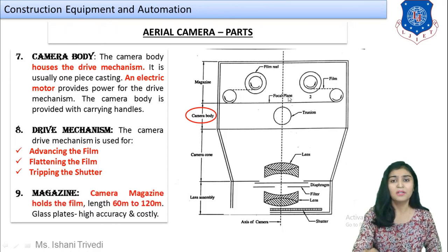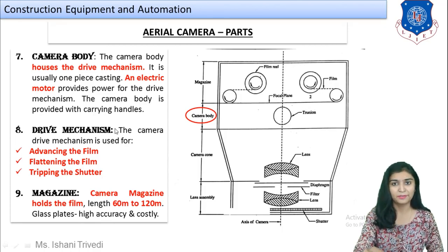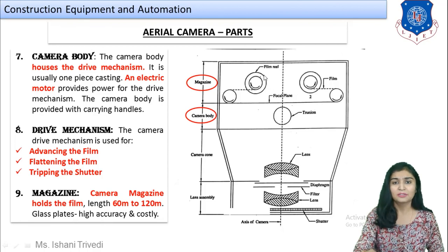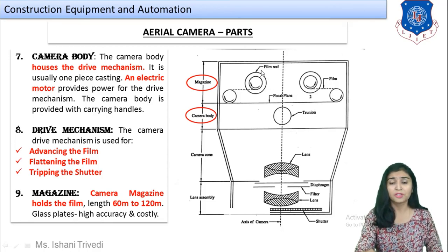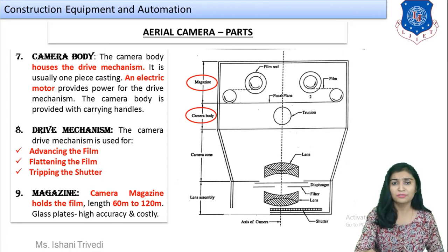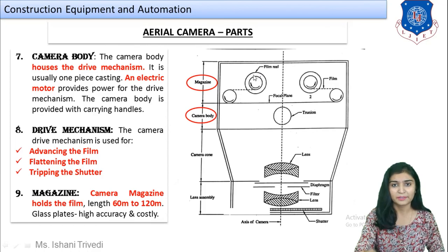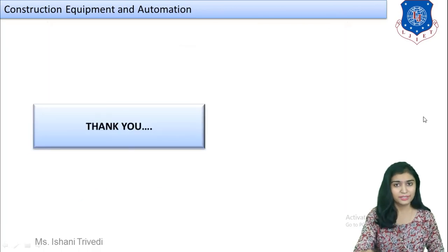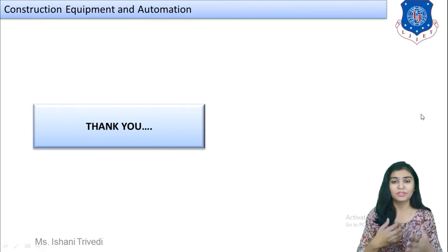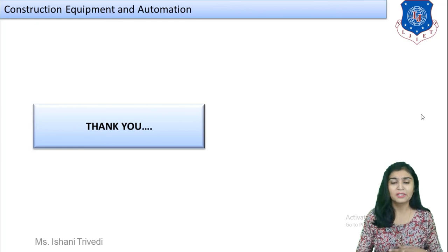The last part is the magazine. The camera magazine holds the film. Since aerial photographs are taken in hundreds or thousands, there are two film reels — as soon as the first one is exhausted, the second starts rolling. The length of such rolls is around 60 meters to 120 meters. This covers all the parts of the aerial camera. Students should go through them thoroughly, as understanding them is essential for the further concepts. We will meet in the next session — have a good day.